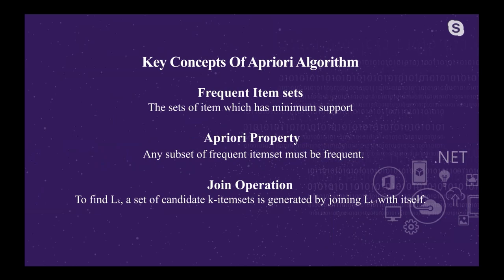There are three key concepts of the Apriori algorithm: frequent item set, the Apriori property, and join operation. A frequent item set is the set of items which meets the minimum support. The Apriori property states that a subset of a frequent item set must also be frequent. Join operation means when one or two item sets create a new item set — to find L_k, a set of candidate k-item sets is generated by joining L_(k-1) with itself.